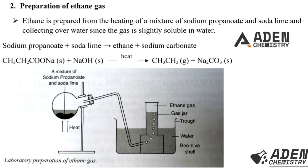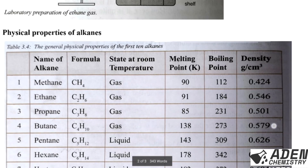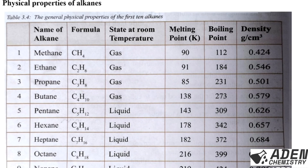The lab setup for ethane preparation is the same as for methane. The only changes are: the alkanoate used is sodium propanoate instead of sodium ethanoate, and the gas collected is ethane instead of methane. Everything else remains the same.